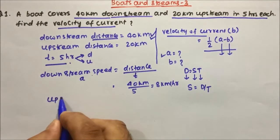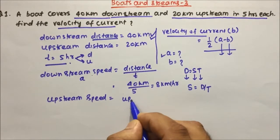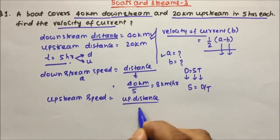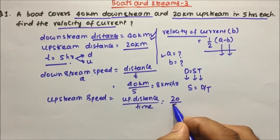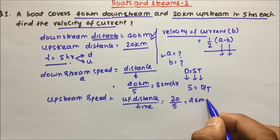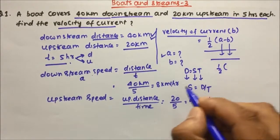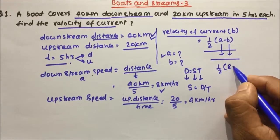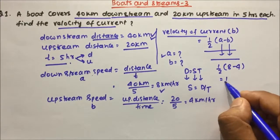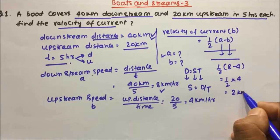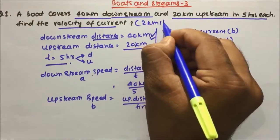Now we calculate upstream speed. Upstream speed = upstream distance ÷ time = 20 ÷ 5 = 4 km per hour. Now, velocity of the current = 1/2 × (A − B) = 1/2 × (8 − 4) = 1/2 × 4 = 2 km per hour. So 2 km per hour is the velocity of the current.